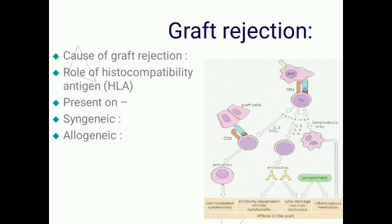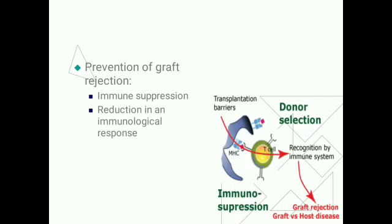Histocompatibility antigens are responsible for graft rejection. These antigens are not similar in any two individuals except identical twins. HLA antigens are present on the plasma membrane of the cell. Syngenic individuals have the same genetic constitution, while allogenic individuals have different genetic constitutions.